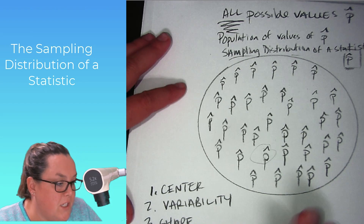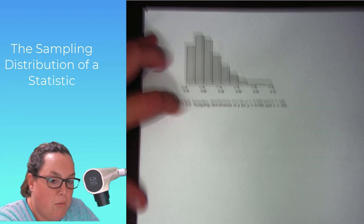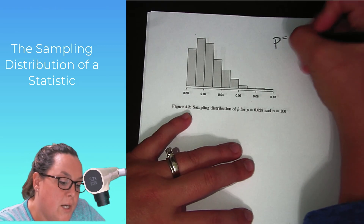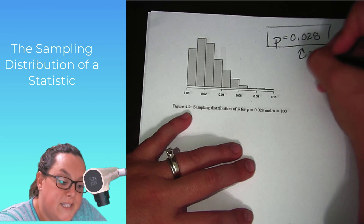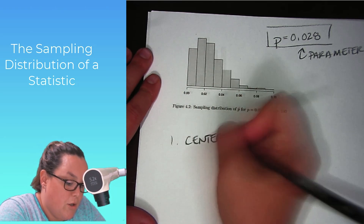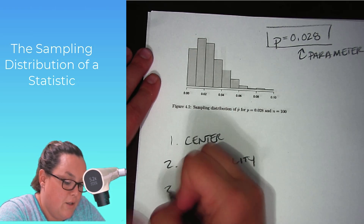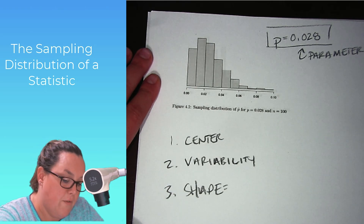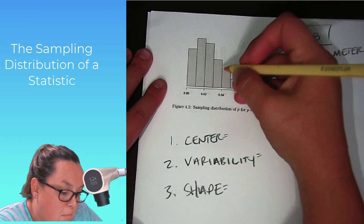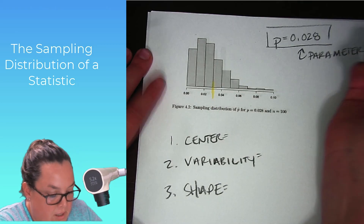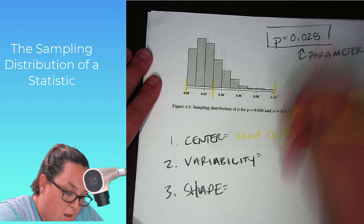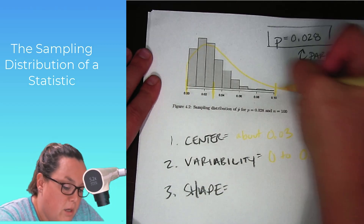I'm going to use an example from the textbook, which looks at the proportion of registered voters in the state of Florida that voted as a minor party affiliation. In the textbook, p is 0.028. This is a parameter because it's from the entire state of Florida. Remember, three things we're interested in: the center, the variability, and the shape. Starting with the center, it appears to be about 0.03. The variability ranges from 0 to 0.1, and the shape appears to be right skewed. This is with samples of size 100.